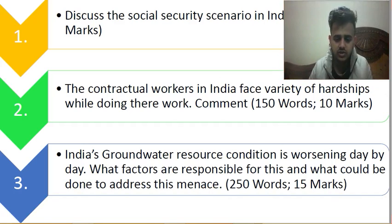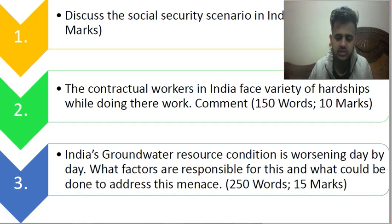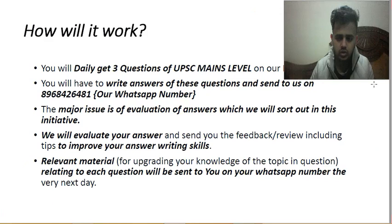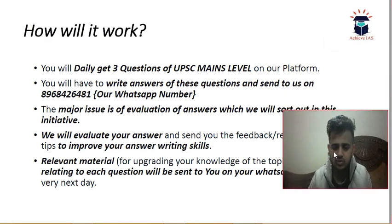The third question, from the static part, is: India's groundwater resource condition is worsening day by day — what factors are responsible for this and what could be done to address this menace? You have to identify the factors causing worsening conditions and the measures that can be taken. The word limit is 250 and the maximum marks are 15.